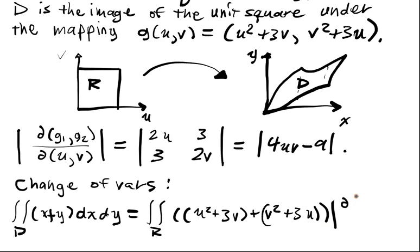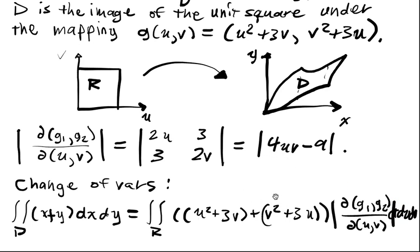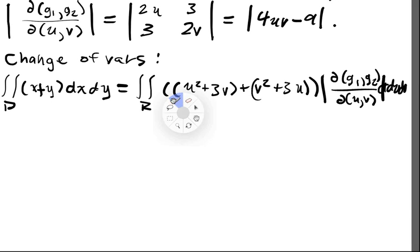So, we get u squared plus 3v plus v squared plus 3u. And, of course, we'll have to substitute in the absolute value of the determinant of the Jacobian. And we have a du, dv factor over here.